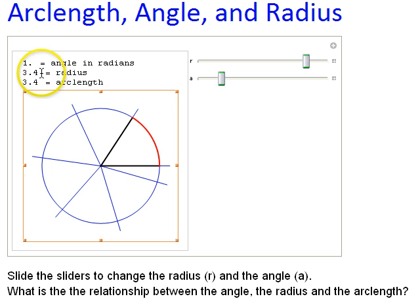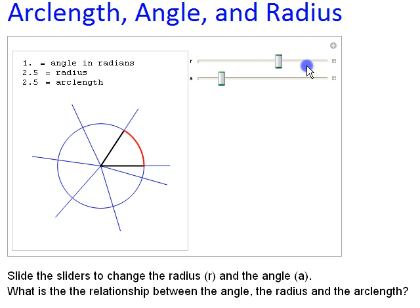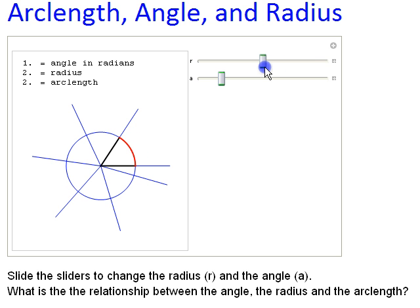So up here I have the angle, one radian, the radius is 3.4, and the arc length is 3.4. Notice if I slide this around and I change the radius of the circle, I'm not changing the angle, but notice that the radius and the arc length are always the same length.